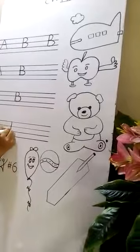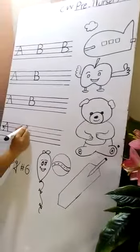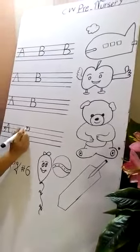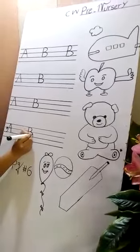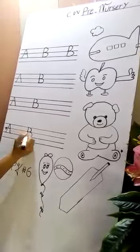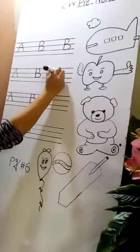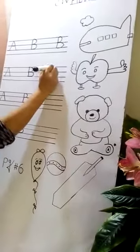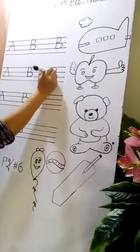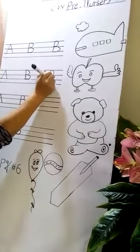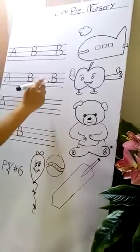Again write with me. Straight your line, again draw a curve, draw another curve. Straight your line, draw a curve, another draw a curve. This is B.